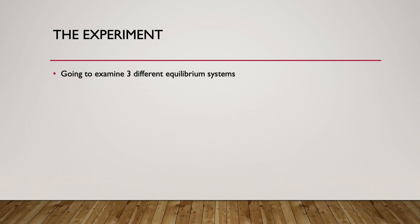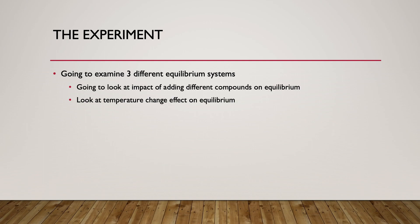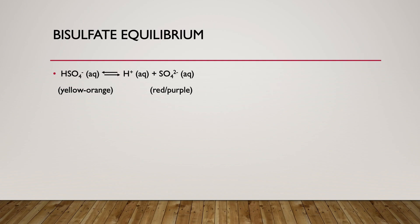For the experiment today, we're going to be looking at three different equilibrium systems. For each one, we'll examine the impact of adding different reactants, products, or compounds that cause competitive reactions to see what visually happens to the equilibrium. We'll also look at temperature effects, and for all of these we'll be looking at color changes to help us know what's happening with our reactions.